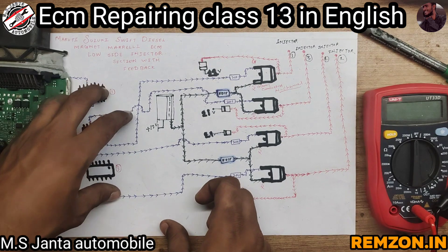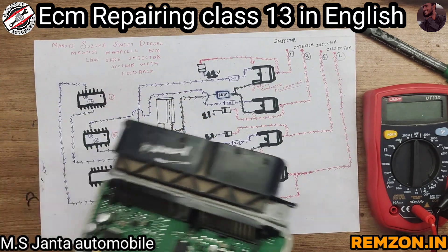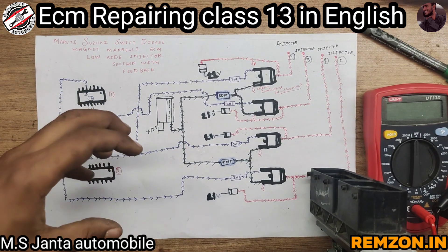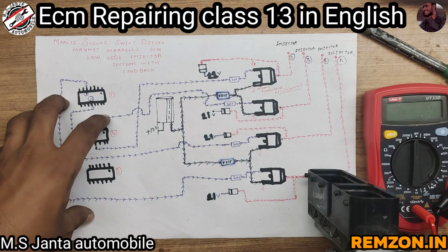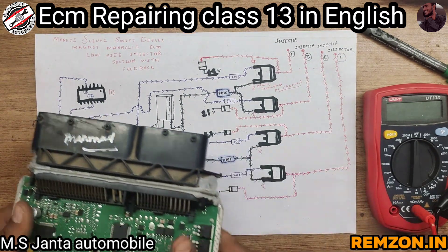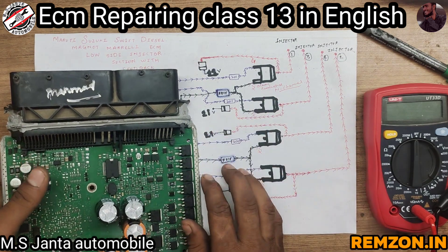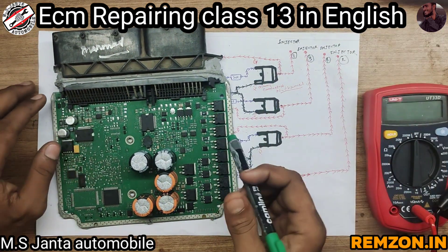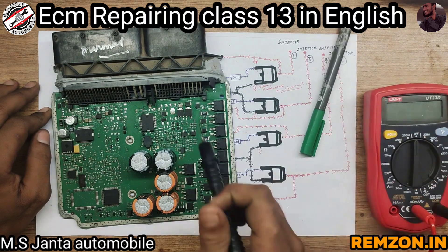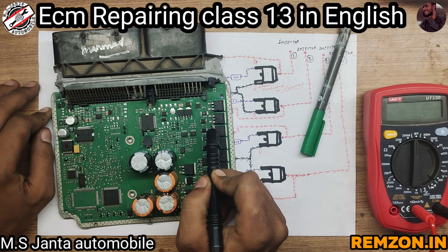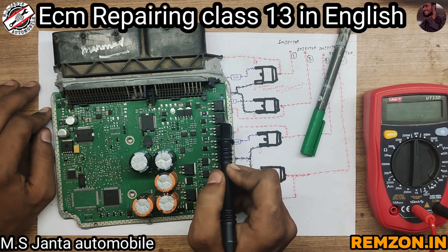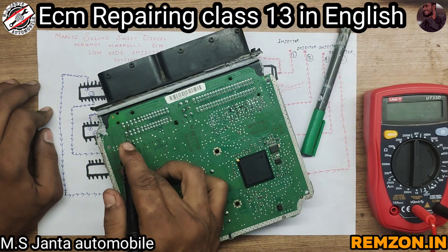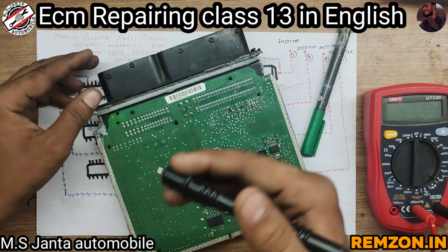People commonly call it injector IC — injector number one, injector number two, injector number three — but it is actually an injector MOSFET switching IC. Now let me explain how it works. This is the N-channel MOSFET. It has a gate, a source, and a drain. The drain is attached to a pin that goes to the injector, through a wiring connector.